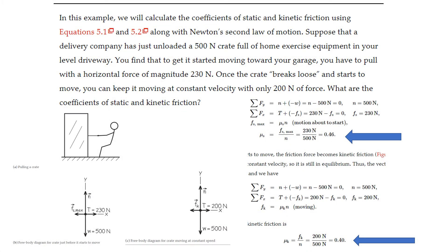Let's do a calculation to find the coefficients of static and kinetic friction using Newton's second law. Suppose a delivery company has unloaded a 500-newton crate of home exercise equipment in your driveway. You find that to get it started moving toward your garage you must exert a horizontal force of 230 newtons. Once the crate breaks free and starts to move, you can keep it moving at constant velocity with only 200 newtons. What are the coefficients of static and kinetic friction?